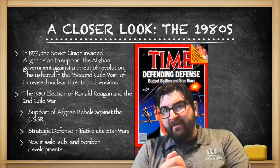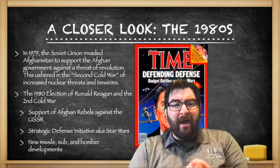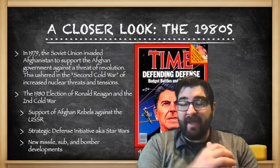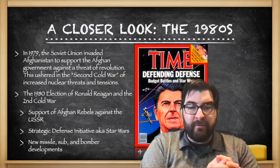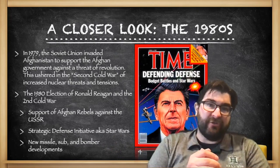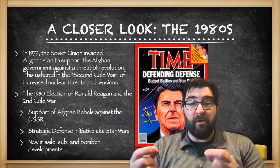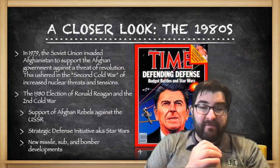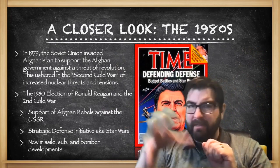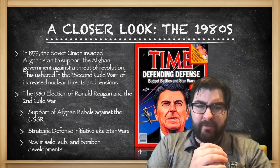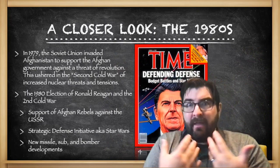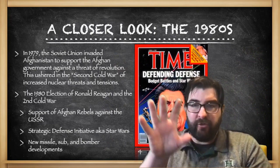In 1980, the United States elected Ronald Reagan. Ronald Reagan would agree to support Afghan rebels against the Soviet Union. He also launched what was known as the Strategic Defense Initiative, also called Star Wars, where the United States would put missile defenses up in space. Now, this never actually happened, but we did pour billions of dollars into it. And it kind of freaked the Soviet Union out that we might be eliminating the prospect of mutually assured destruction.